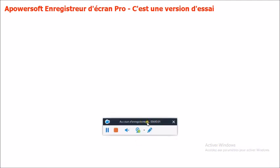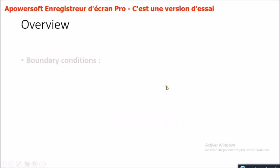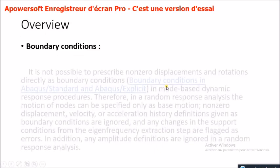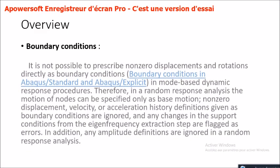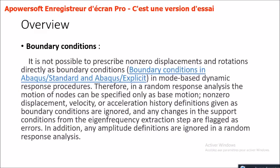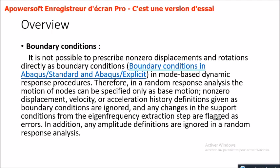For boundary conditions, it is not possible to prescribe non-zero displacements and rotations directly as boundary conditions in Abacus Standard and Abacus Explicit in mode-based dynamic response procedures. Therefore, in a random response analysis, the motion of nodes can be specified only as base motion. Non-zero displacement, velocity, or acceleration history definitions given as boundary conditions are ignored, and any changes in the support conditions from the eigenfrequency extraction step are flagged as errors. Any amplitude definitions are also ignored in a random response analysis.